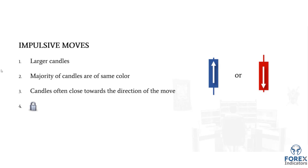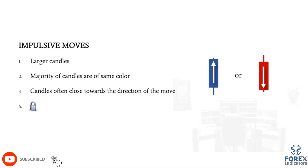Together, all three characteristics — large candles, same-color majority, and closes towards the direction of the move — collectively indicate a strong presence of buying or selling pressure. There is a fourth characteristic covered in the full price action course, but these three are what you need to work with for now.